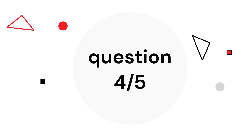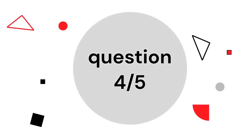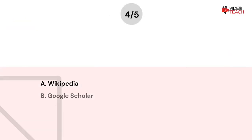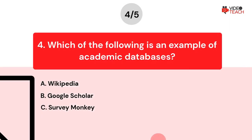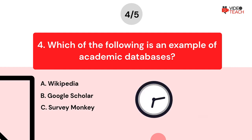Question number four. Which of the following is an example of academic databases? Option A: Wikipedia. Option B: Google Scholar. Option C: SurveyMonkey. Now you have about 15 seconds to think about your answer.